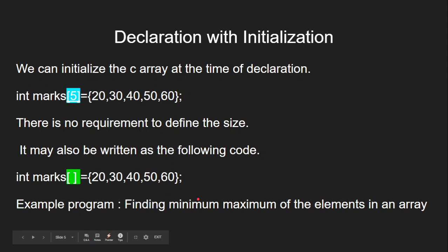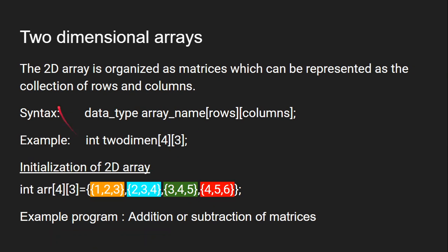Now let us see the next slide about two-dimensional arrays. A two-dimensional array has two dimensions: rows and columns. In mathematics we have matrices, which are a collection of rows and columns. We use the two-dimensional array concept to represent a matrix in a programming language. The syntax is: data type, array name, rows, columns. For example, int two_d[5][3] means there are 5 rows and 3 columns in this array.